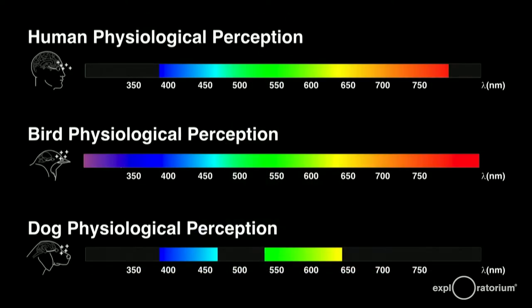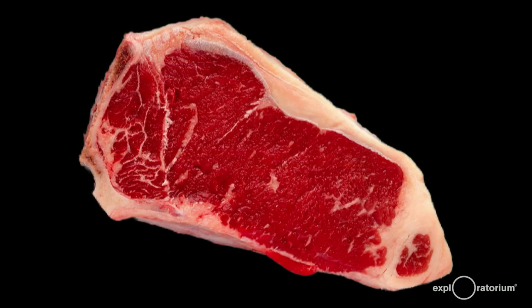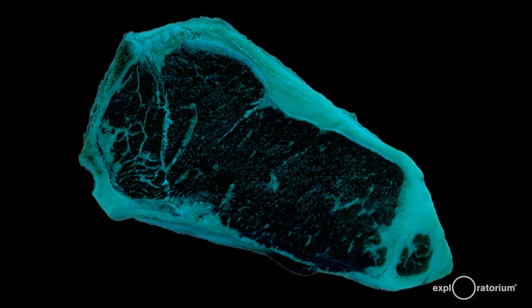Just because our human perception only covers red to violet, that doesn't mean that other species perceive the same thing. Birds have a somewhat wider range, and dogs substantially less range, with virtually no red perception. You might see a nice juicy raw steak like this, but your pooch may see something more like this. Remember, however, that Fido has a much better sense of smell than you do, making up for the deficit.